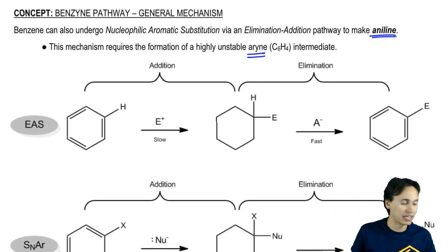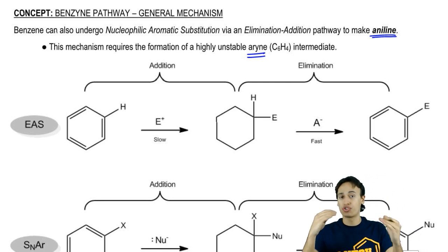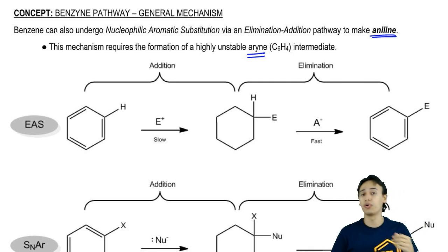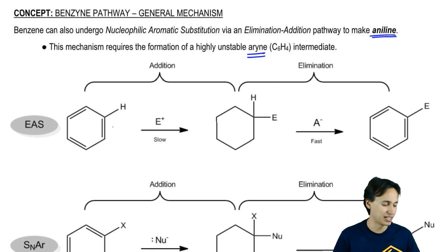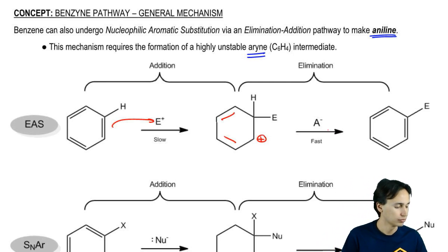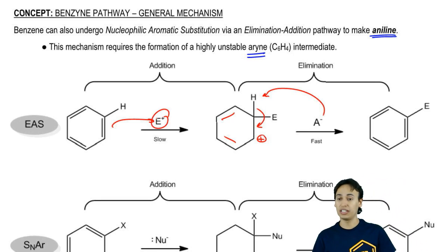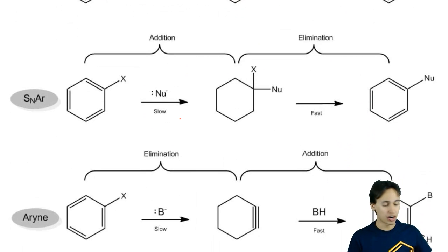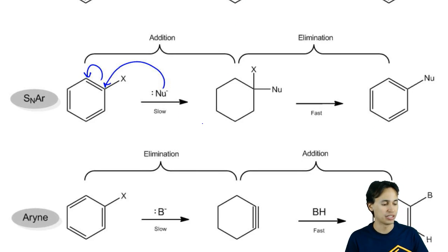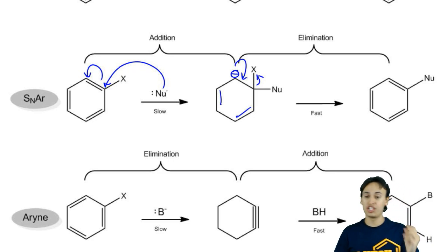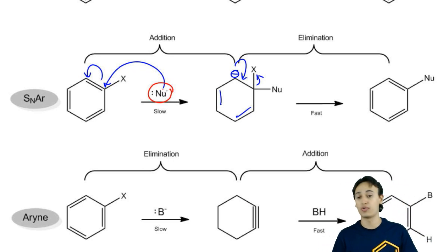This is actually a way that we make aniline. Let me show you the mechanisms we've learned so far and how benzene is similar and different. For EAS, we add first and then eliminate — addition and elimination through an electrophile. For SNAr, we also add first, but through a nucleophilic attack, and then we eliminate using the same anion. So SNAr is also addition-elimination, but nucleophilic.